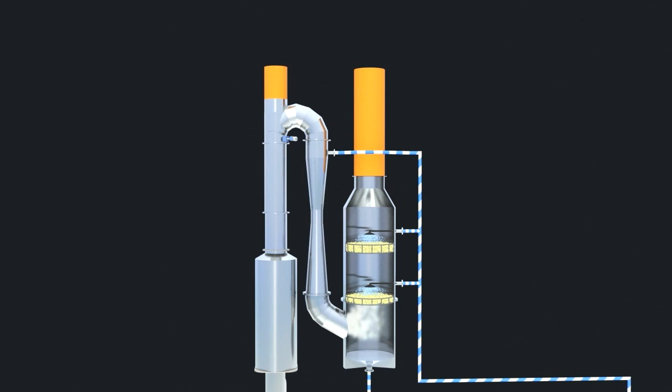Inside the scrubber unit, scrubbing water is sprayed downwards through packed beds in two stages, eventually coming into contact with the exhaust gas coming from below. Packed beds improve the mixing of the exhaust gas and water and increase the surface area available for the SOx scrubbing.